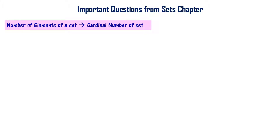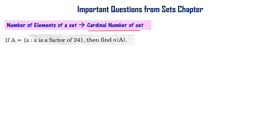The number of elements of a set is known as the cardinal number of sets, or cardinality of sets, and it is one of the important topics. For example, if A is a set of elements x such that x is a factor of the number 24, then find the number of elements of A, or cardinality of set A. This is from the Telangana final exam 2019.